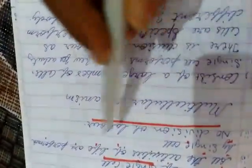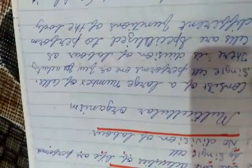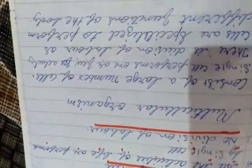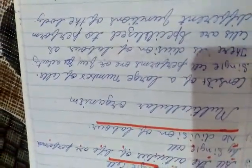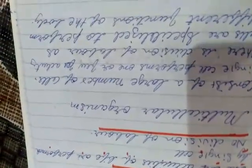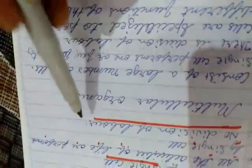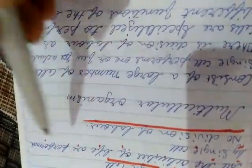This division of labor does not take place in unicellular organisms because they have only a single cell and that single cell performs all the activities required for life processes to be sustained.